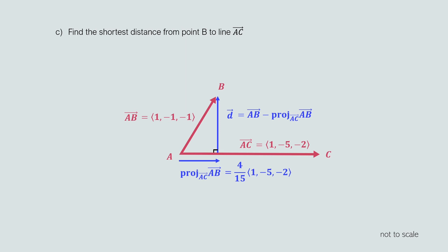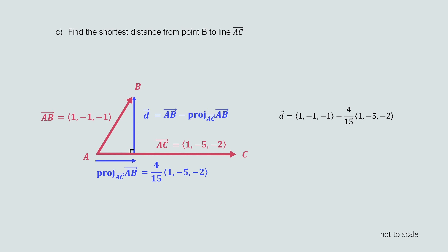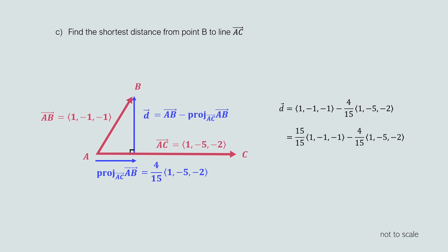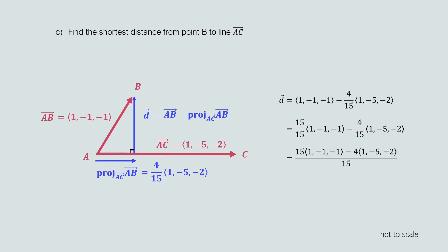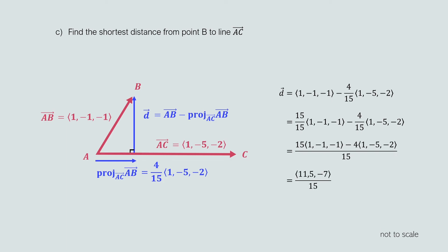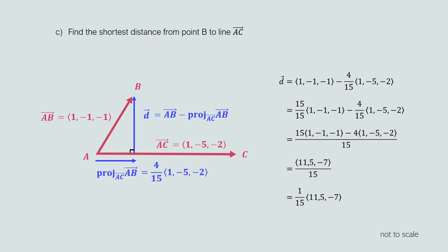We know AB and the vector projection, so we substitute into the equation. To make subtraction easier, we write (1, -1, -1) as 15 over 15 times (1, -1, -1). Putting everything over a common denominator of 15, vector d becomes 15 times (1, -1, -1) minus 4 times (1, -5, -2), all over 15. Subtracting components: 15 minus 4 gives 11i; negative 15 plus 20 gives 5j; negative 15 plus 8 gives negative 7k. So vector d equals 1 over 15 times the vector (11, 5, -7), which is the vector rejection of AB from AC.